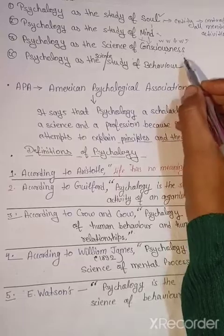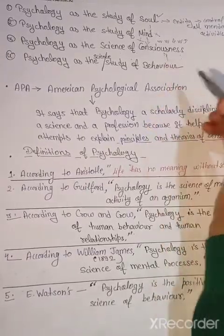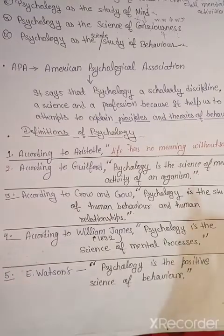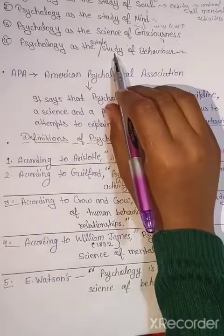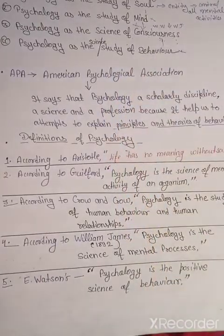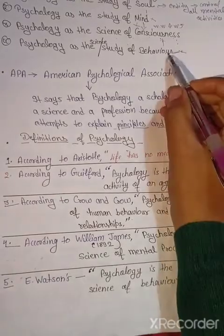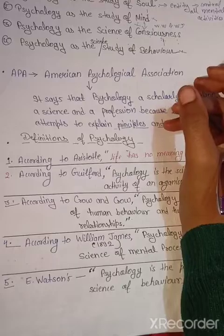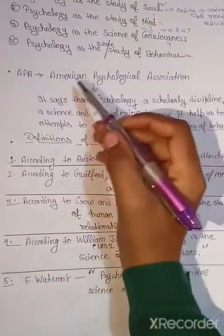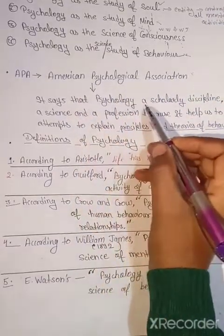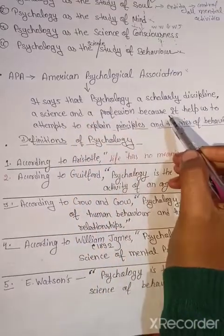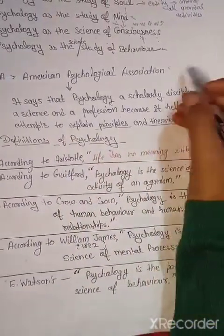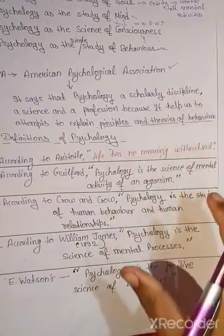उसके बाद behaviorists ने इस definition को भी neglect कर दिया. J.B. Watson ने इन सारी definitions को neglect करके कहा कि psychology is actually the study of behavior — क्योंकि human एक social animal है जो society में रहता है, और उसका behavior दूसरे individuals के साथ कैसा है, वो psychology में study करते हैं. American Psychological Association ने कहा कि psychology is a scholarly discipline, a science and a profession — it helps us to explain principles and theories of behavior.